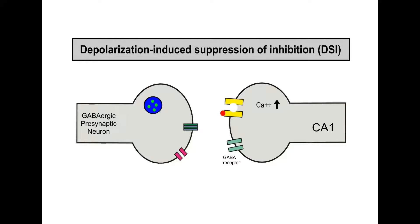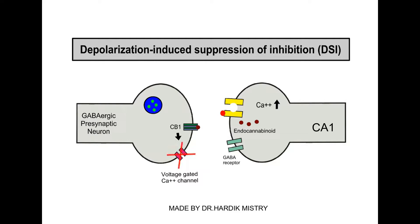When calcium concentration increases in the post-synaptic terminal, it releases endocannabinoids at the synapse. These endocannabinoids bind with CB1 receptors present on the presynaptic membrane of the GABAergic presynaptic terminal. Activity of the CB1 receptor blocks voltage-gated calcium channels on the presynaptic membrane.